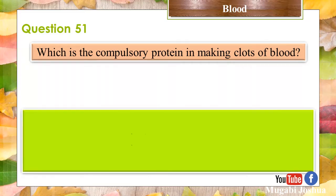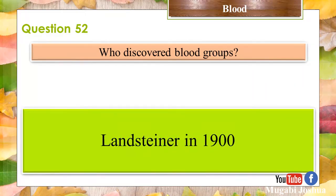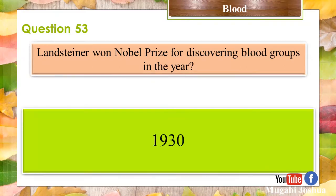Question 51: Which is the compulsory protein in making clots of blood? Fibrinogen. Question 52: Who discovered blood groups? Landsteiner in 1900. Question 53: Landsteiner won the Nobel Prize for discovering blood groups in the year 1930.